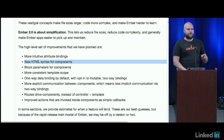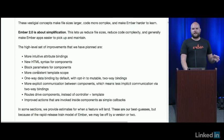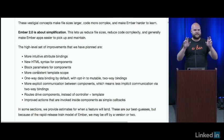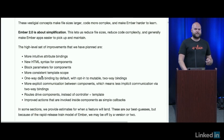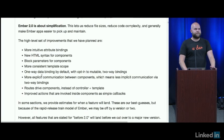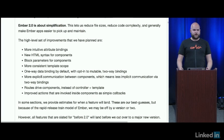New HTML syntax for components is a Glimmer feature slotted for 1.13. Block params — that was shipped back in 1.9. More consistent template scope — related to block params, we've deprecated all the different forms of helpers that can change what `this` is inside a template, so it's very clear where properties are coming from. One-way binding by default with opt-in mutable two-way bindings — that's a 1.13 feature.